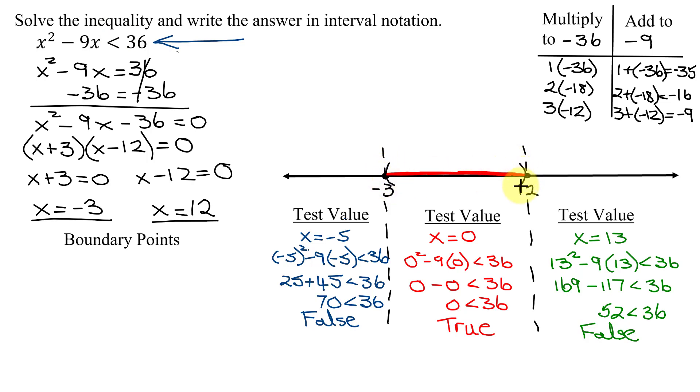So there is a graph of my solution set. We need to write it in interval notation. So my interval is going to start at negative 3. We must use a parentheses since we're not including the boundary points, comma, all the way up to 12 with another parentheses on it. So that is the answer to this problem in interval notation.